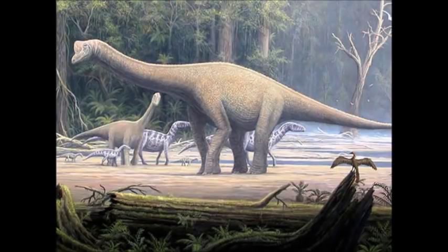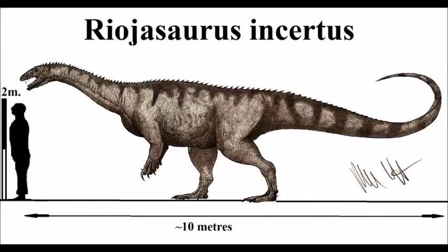Sauropodomorpha is one lineage of dinosaurs containing those famous long-necked quadrupedal forms called the sauropods. However, these aren't the only members of Sauropodomorpha. The prosauropods, or pre-sauropods, are another paraphyletic clade of sauropodomorphs, whom we mentioned in dinosaur ancestors.